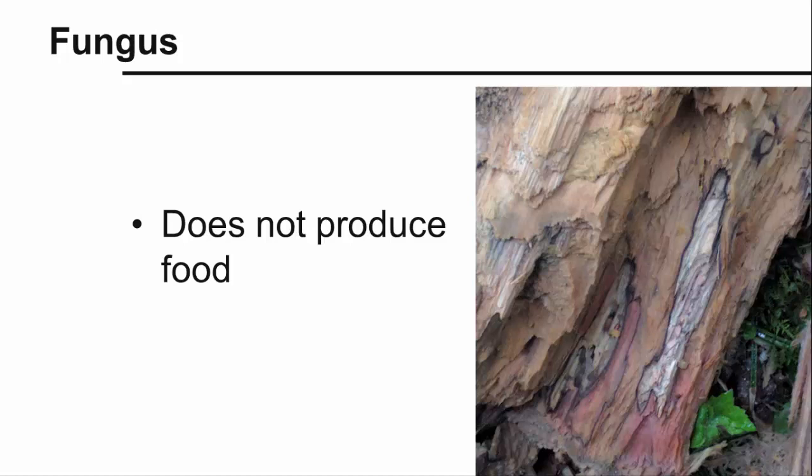Unlike plants, fungi do not produce their own food, thus relying on some other source from which to get the nutrients they need. A common example of this would be a fungus that is decomposing dead wood, such as the fungus shown here.